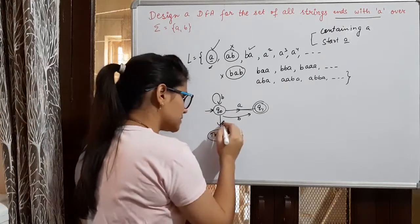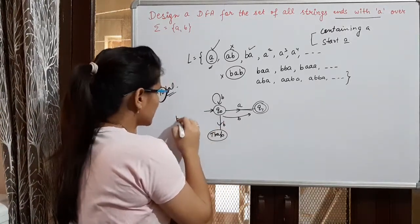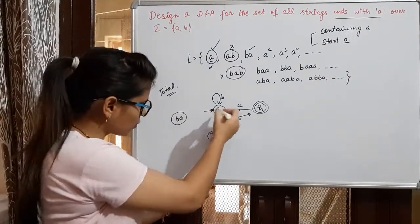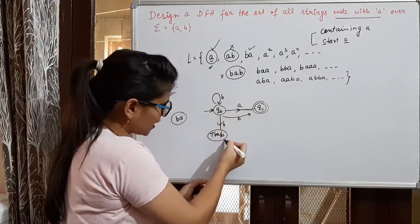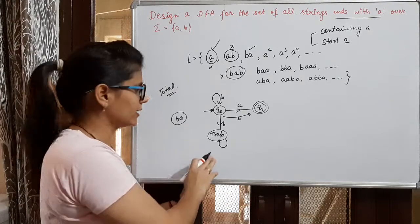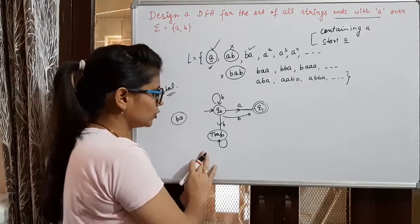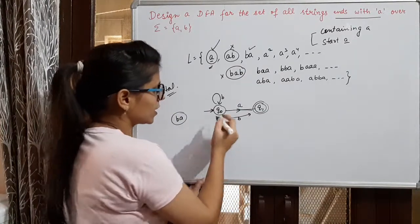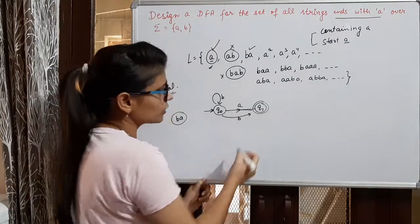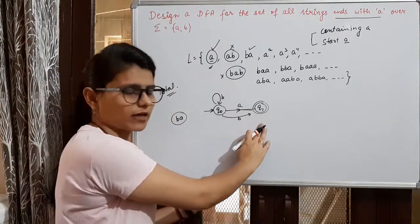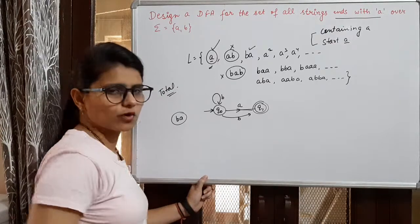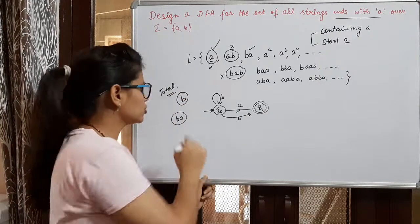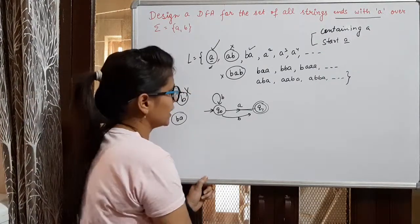If we go into a trap state when reading B, and a string like B, A comes in, that string should be accepted because it ends with A. But if B sends us to a trap state, then the string B, A would not be accepted since trap means dead end. So we cannot send B to a trap state. If we go to Q1 on reading B, and Q1 is our final state, then we would accept the single string B, which should not happen because it ends with B, not A.